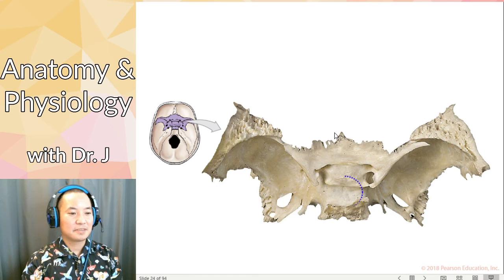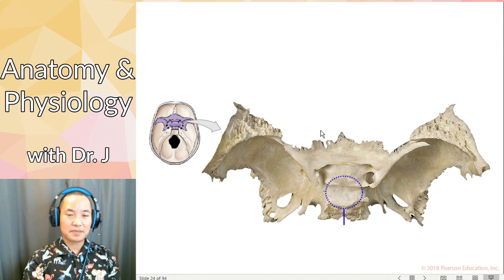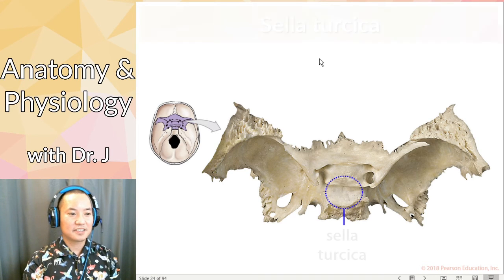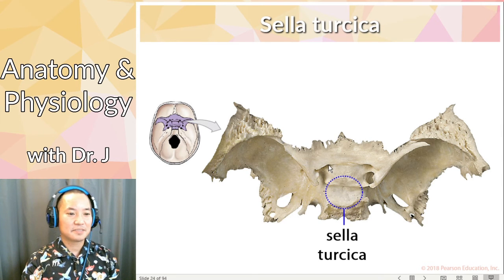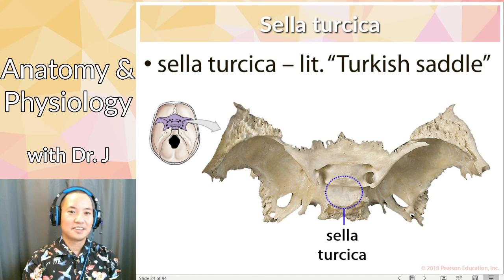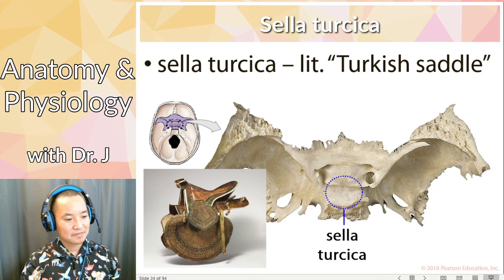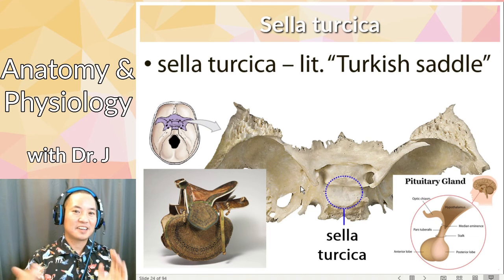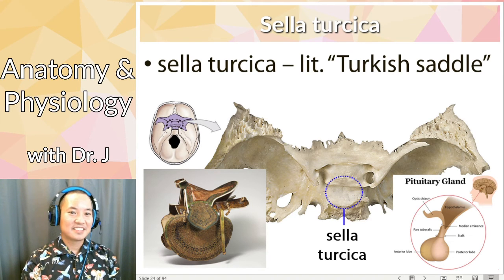One specific structure on the sphenoid I definitely want you to know, especially if continuing on to the next course, is the sella turcica. Sella turcica is Latin for 'Turkish saddle.' Why is it important? It houses a very important gland — the pituitary gland, which secretes and controls many of the hormones in your body. It's sometimes nicknamed the master gland.